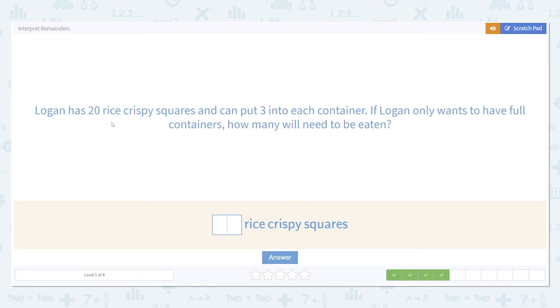Logan has 20 Rice Crispy squares and can put three into each container. If Logan only wants to have full containers, how many will need to be eaten? Once again, there are 20 squares being put into groups of three,